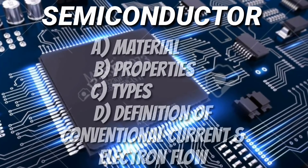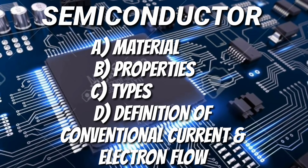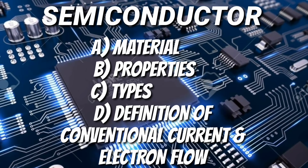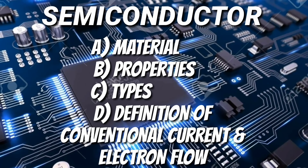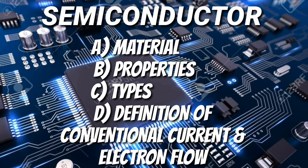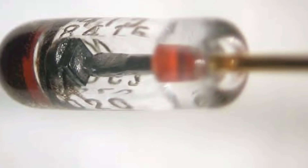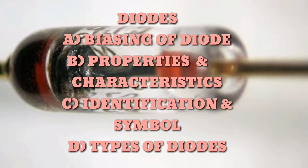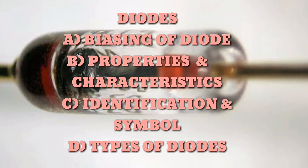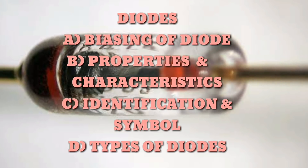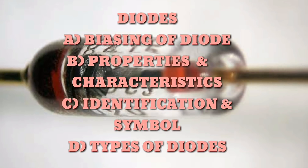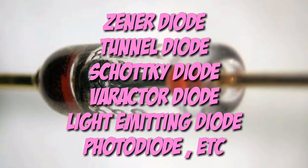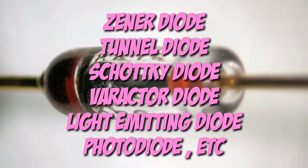Starting with our main topic, we have semiconductor. We need to study semiconductor materials, properties of semiconductor, and types of semiconductor which are intrinsic and extrinsic, as well as the definition of conventional current and electron flow. For both category B1 and B2, diode is studied in detail at level 2. We need to study biasing of diode — forward, reverse, or unbiased — properties and characteristics of diode, diode identification and symbol, and the properties, working, and application of different types of diode, which include Zener diode, tunnel diode, Schottky diode, varactor diode, light emitting diode or LED, and photodiode.